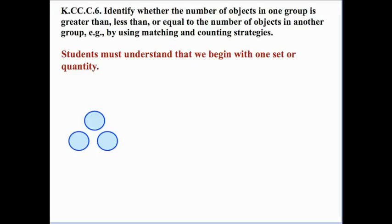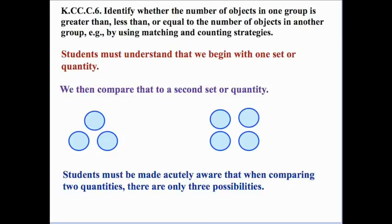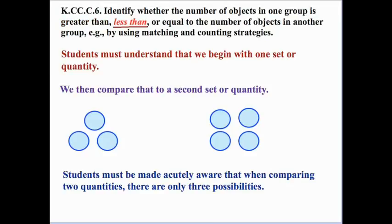First of all, students must understand that we begin with one set or quantity and compare it to a second set or quantity. Students must be very aware that when comparing two quantities, there are only three possibilities: either the first set or quantity is greater than the second, it's less than the second, or it's equal to it.